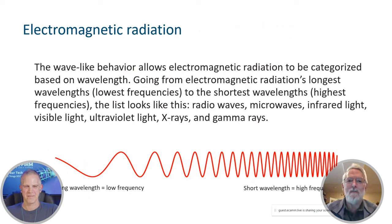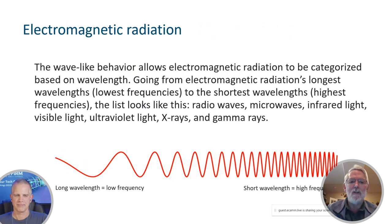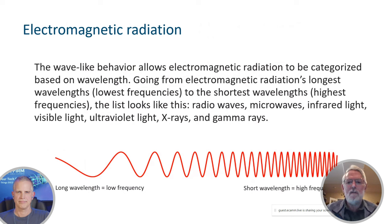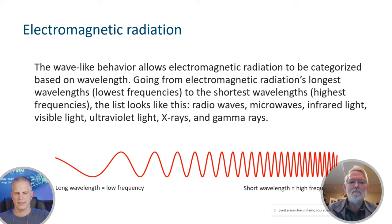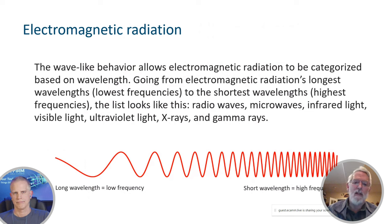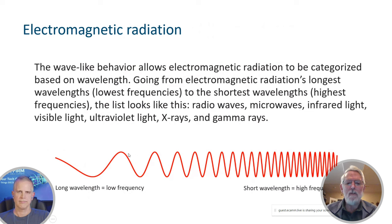Electromagnetic radiation can be categorized based on its wavelength. Long wavelength equals low frequency; short wavelength equals high frequency. The electromagnetic spectrum, from lowest to highest frequency, includes: radio waves, microwaves, infrared light, visible light, ultraviolet light, X-rays, and gamma rays. A graphic showing a sine-wave-like signal illustrates this: long wavelength corresponds to low frequency, and short wavelength corresponds to high frequency.